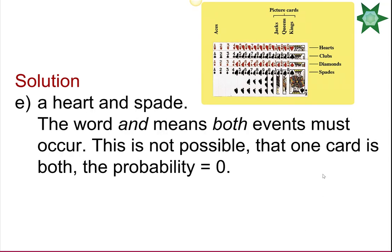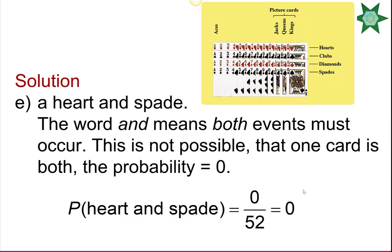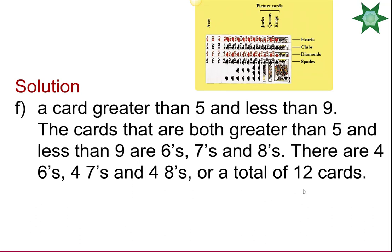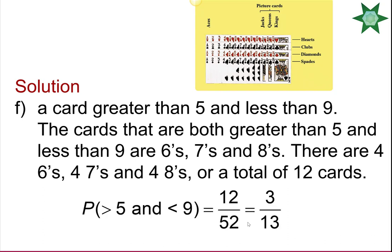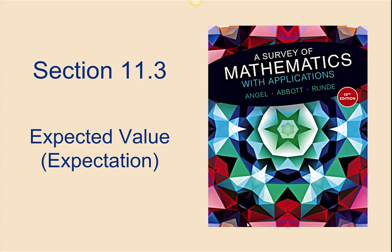The probability of selecting a card that is both a heart and a spade: the word 'and' means both events must occur, but no card can be both, so this probability is 0. The probability of getting a card greater than 5 and less than 9 covers values 6, 7, and 8 — that's 3 per suit times 4 suits = 12 cards, so the probability is 12 over 52, or 3 out of 13.